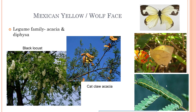The Mexican yellow are often called a wolf face. From the underside they are completely yellow, but when they open their wings they look nothing like you would think from the underside. They have a very camouflaged caterpillar and like things in the legume family — acacia and Dalea. So black locust, catclaw acacia, things like that. We have a lot of native acacias, so these guys are just a very common native butterfly.